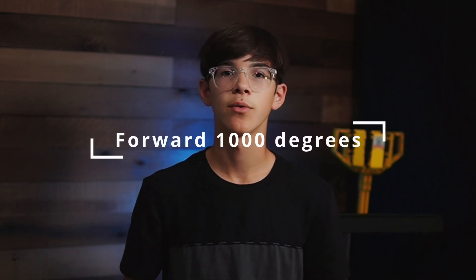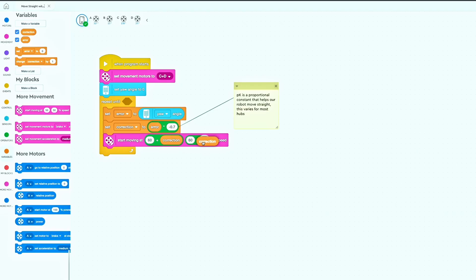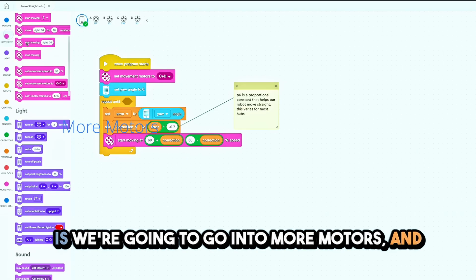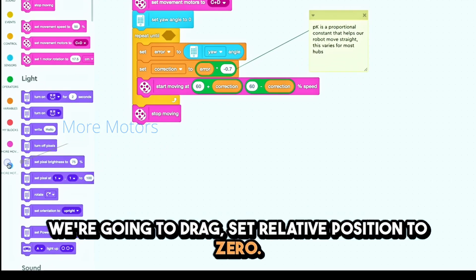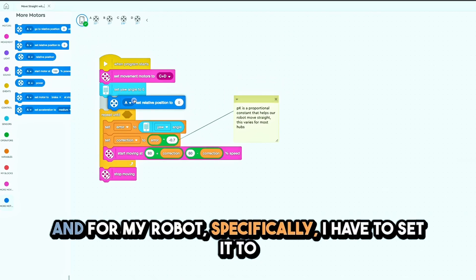So first of all, what we're going to do is we're going to go into more motors and we're going to drag set relative position to zero. For my robot specifically, I have to set it to be one of the wheels that is moving so that I can measure the degrees that that wheel has tracked.